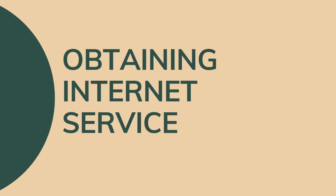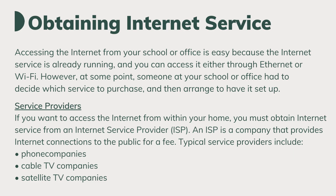Obtaining internet service: accessing the internet from your school or office is easy because the internet service is already running, and you can access it either through Ethernet or Wi-Fi. However, at some point, someone at your school or office had to decide which service to purchase and arrange to have it set up. We have different internet service providers. An ISP is a company that provides internet connections to the public for a fee. Typical service providers include phone companies, cable TV companies, and satellite TV companies.